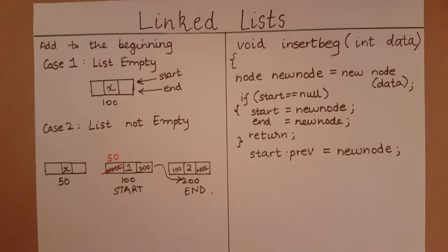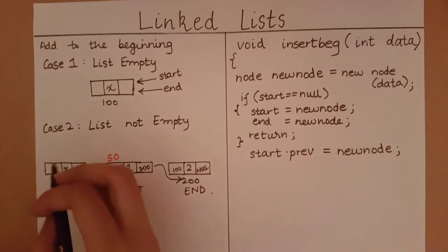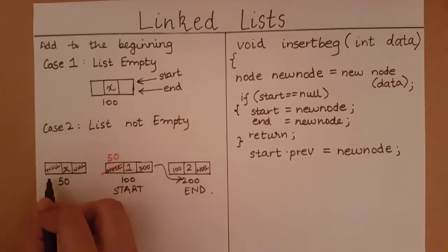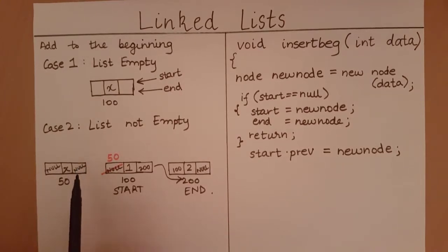The next thing I must do is, with our pre-existing new node, currently previous and next are set to null. Now I want to change this next. I want the next element to this node to be whatever is currently in the start node.